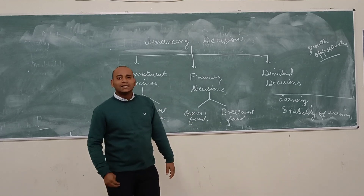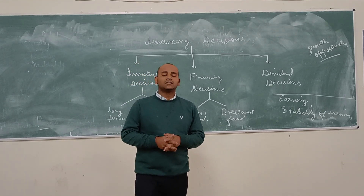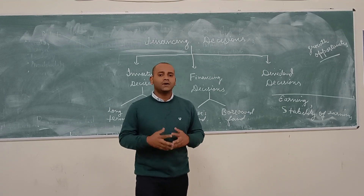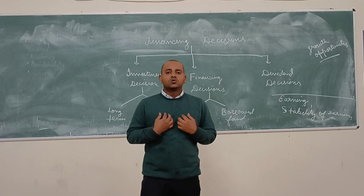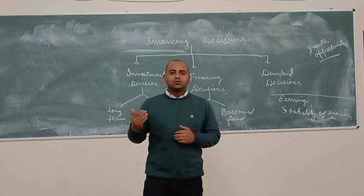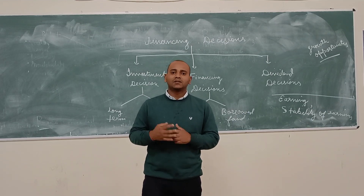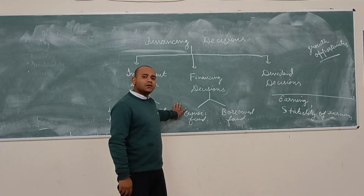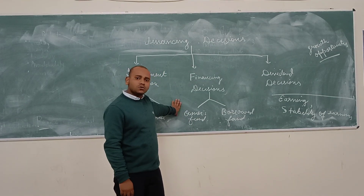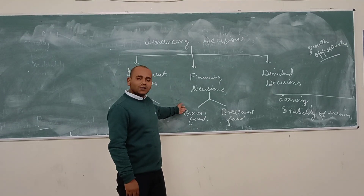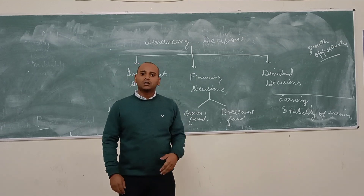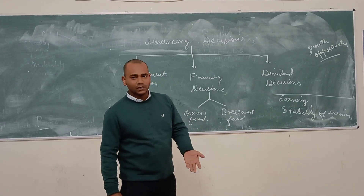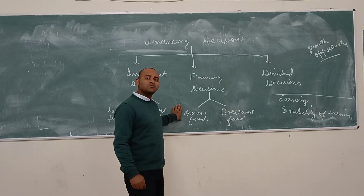The first source is owners fund and the second source is borrowed fund. Owners fund means you give the part of the business — you select someone who will become part of the company and get a share of your company. For example, if I want to start a business and need funds, I approach my friend and tell him to invest in my company and become a partner. In big companies, owners fund includes shares — the company issues shares to the public, and when the public purchases shares, they become part of the company and receive profit. This is called owners fund.